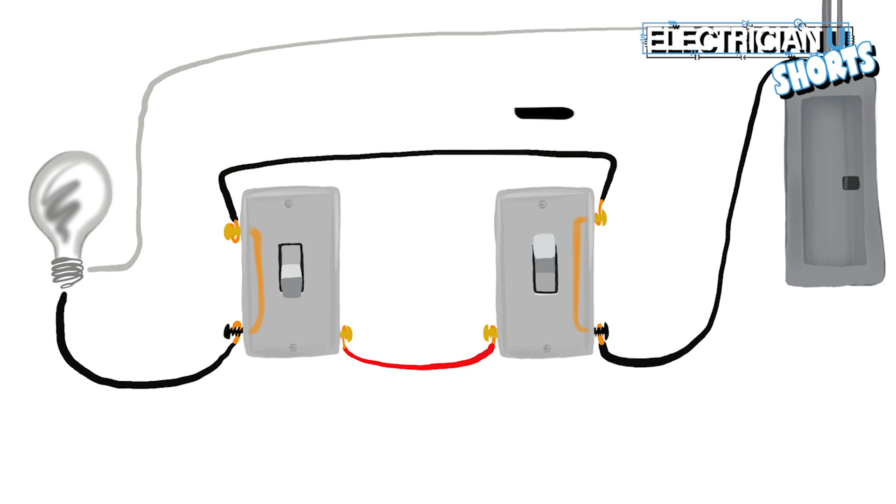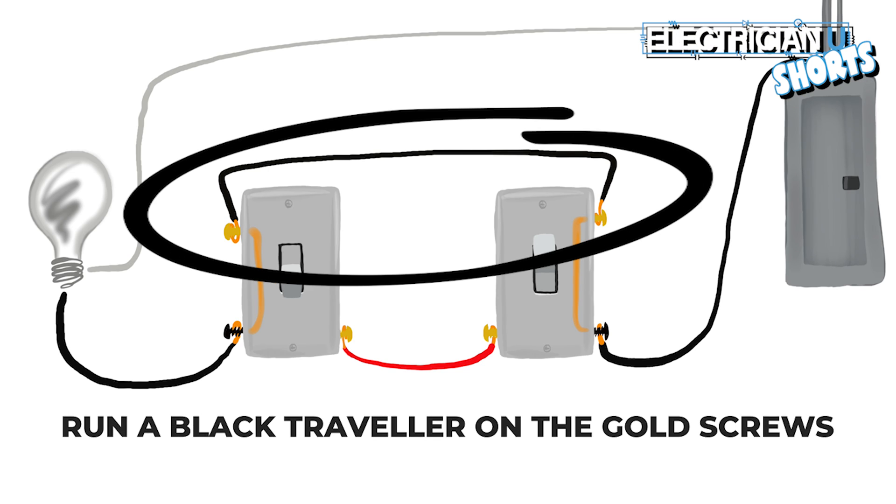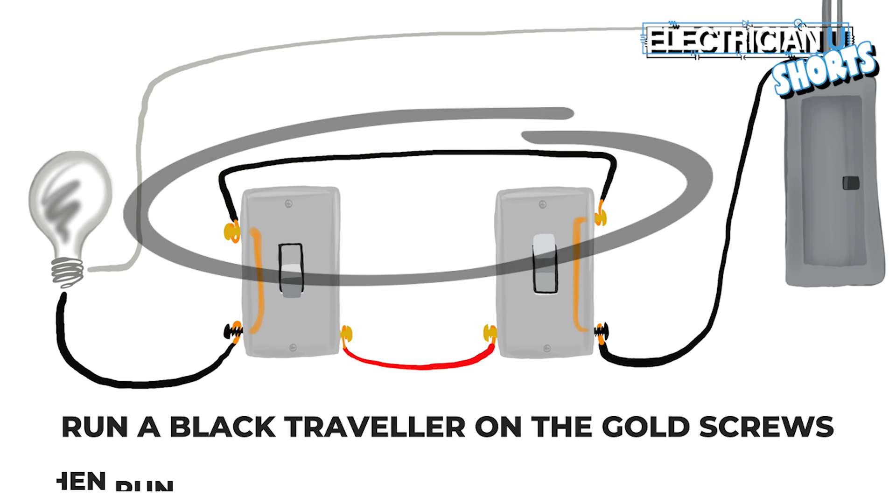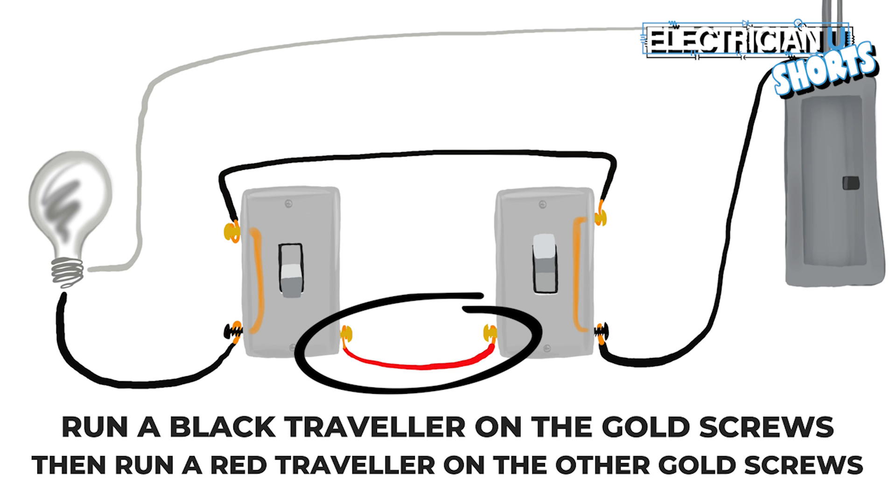So we've got one traveler that you would run from this device to this device and we'll call this your black. In a 12-3, the travelers that you're going to run, you're going to run one black conductor and you're going to run one red conductor.